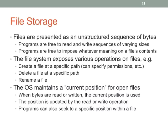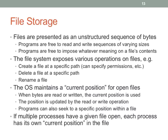The OS maintains a current position for open files on a per-process basis. If multiple processes have a given file open, each process has its own current position. Typically, even if you have multiple file descriptors for the same open file, they share the same current position — that's Unix's approach. The current position will be distinct on a per-process basis.